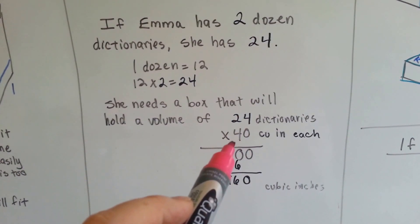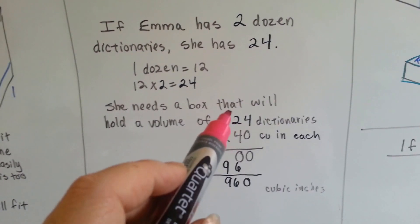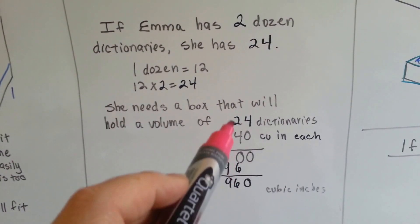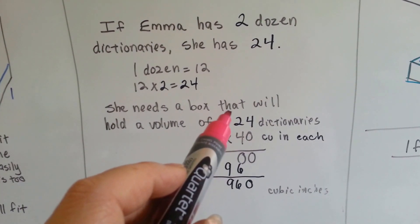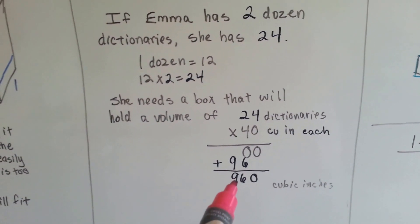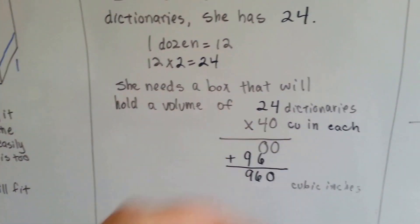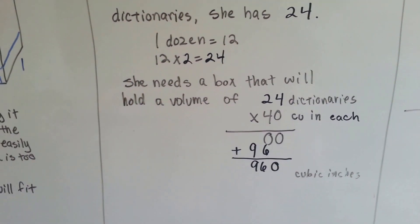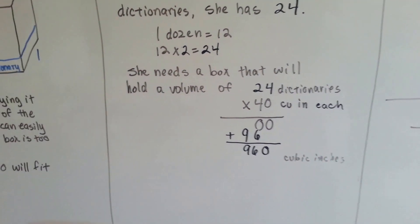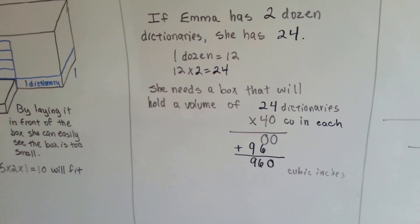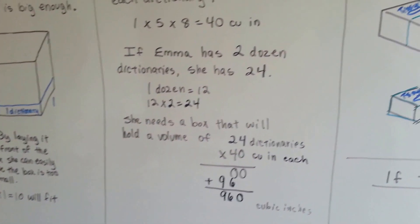we multiply the zeros and get zero and zero. Then we multiply the fours, four times four is sixteen. You carry the one and put the six down. Four times two is eight, with the one carried over is nine. She has nine hundred and sixty cubic inches. She needs to find a box that can hold a volume of nine hundred and sixty cubic inches. Or a thousand would be better, because then she could know for sure that she'd stick them all in there and they would fit.